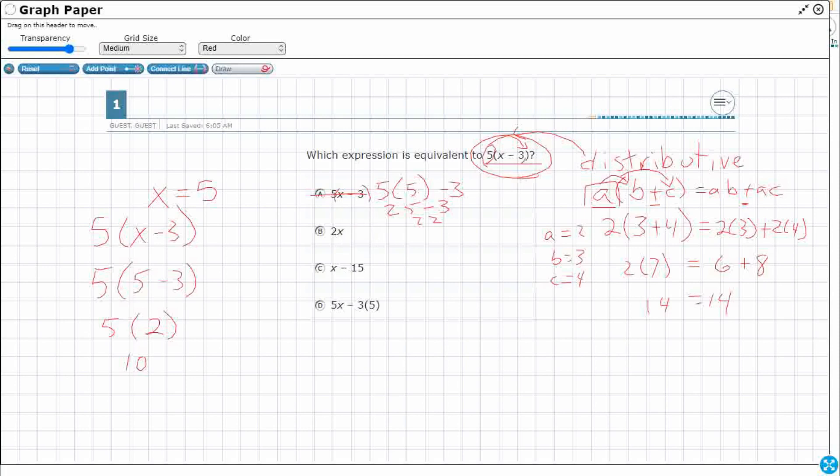This just subtracts 5 minus 3 makes 2. That doesn't make any sense. 2 times 5. Yeah, that makes 10. That's not anything that we need here. Now, X minus 15. So, they just multiplied 5 times 3. I've got 10 minus 15. That's going to be negative 5. So, that doesn't make any sense either.